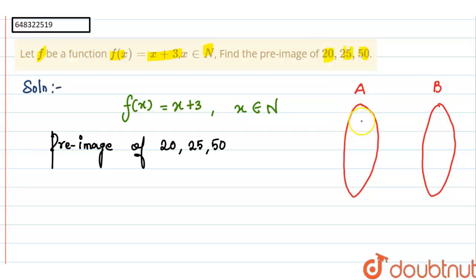Then here the domain is 1, 2, 3. Codomain is A, B, C.